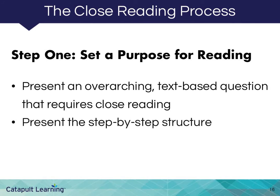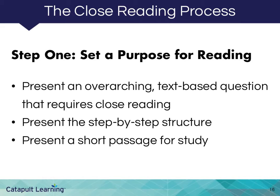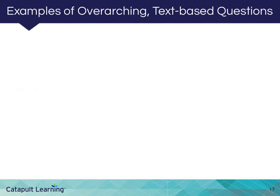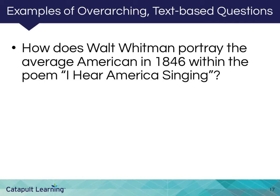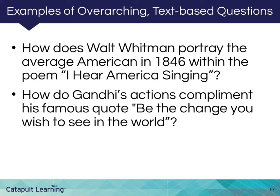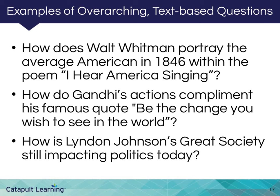In the next few slides, we'll explain the close reading step-by-step structure: first reading, second reading, note-taking. The third important piece of this step is to select a short passage for investigation. You don't need to do close reading with every passage — it would be exhausting for you and your students. Pick a short, compelling section, something worthy of deeper digging. Here are three examples of overarching, text-based questions we can ask before engaging new text: How does Walt Whitman portray the average American in 1846 within the poem I Hear America Singing? How do Gandhi's actions complement his famous quote, 'Be the change you wish to see in the world'? How is Lyndon Johnson's great society still impacting politics today? Each question provides students with a purpose or lens through which to read and analyze the text.